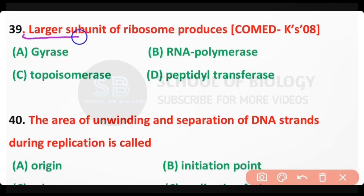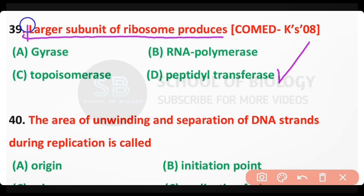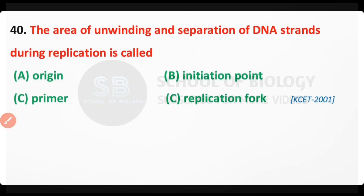Question number 39: The larger subunit of the ribosome produces — gyrase, RNA polymerase, topoisomerase, or peptidyl transferase? The correct answer is option D: the larger subunit of the ribosome produces peptidyl transferase, which is present at the P site of the larger subunit.